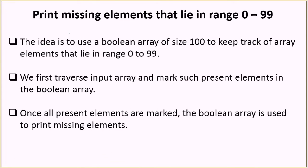Let us look at the solution. The idea is to use a boolean array of size 100 to keep track of array elements that lie in the range of 0 to 99. We will have a boolean array of size 100 because the elements from 0 to 99 total 100 elements. We first traverse the input array and mark such elements present in the boolean array.